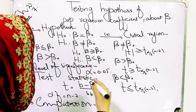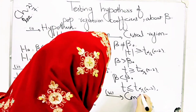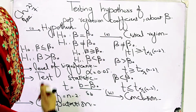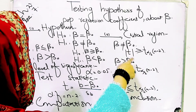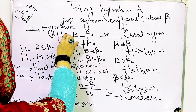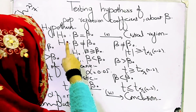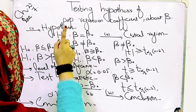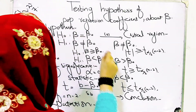The last step is the conclusion. You look at the critical region and check your hypothesis. If the computed value falls within the middle range, we accept the null hypothesis. If it falls in the critical region, we reject the null hypothesis. If it is not in the critical region, we accept the null hypothesis.